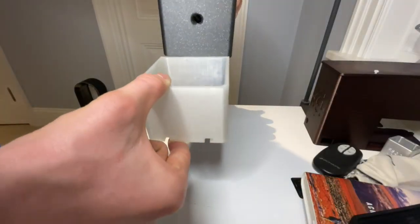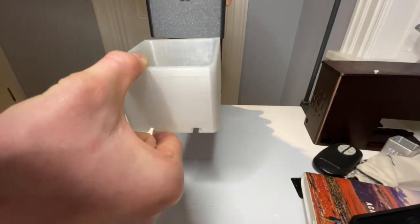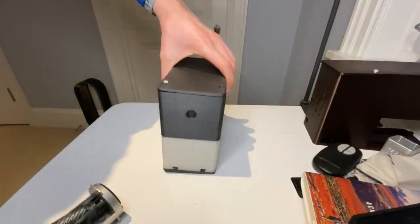The shavings cartridge designed for this project is mounted on rails, allowing it to be easily slid in and out from under the sharpener for emptying purposes.